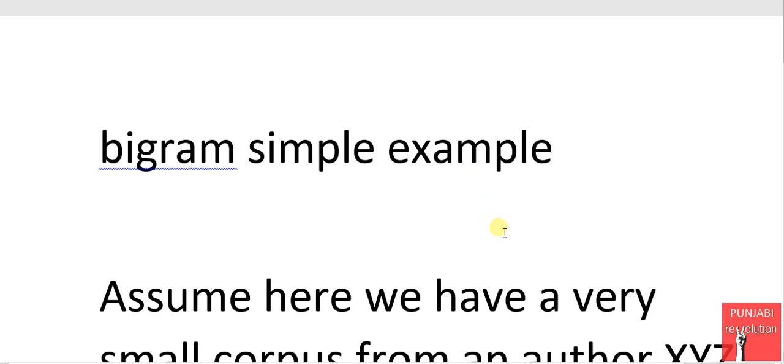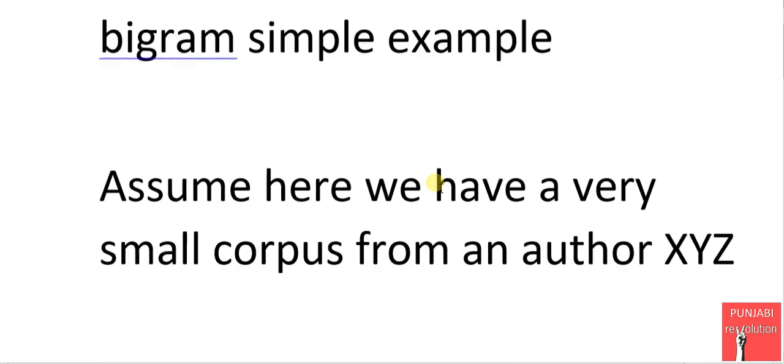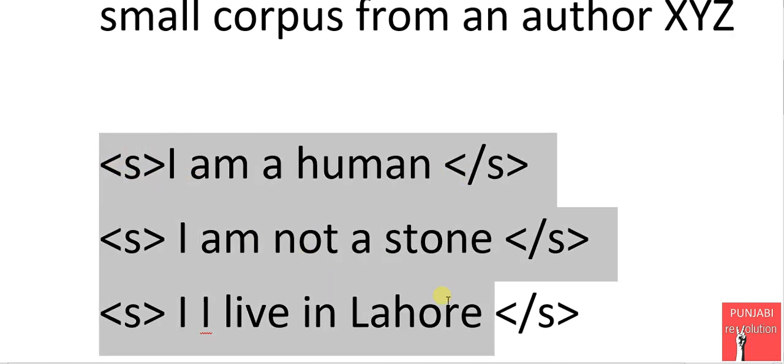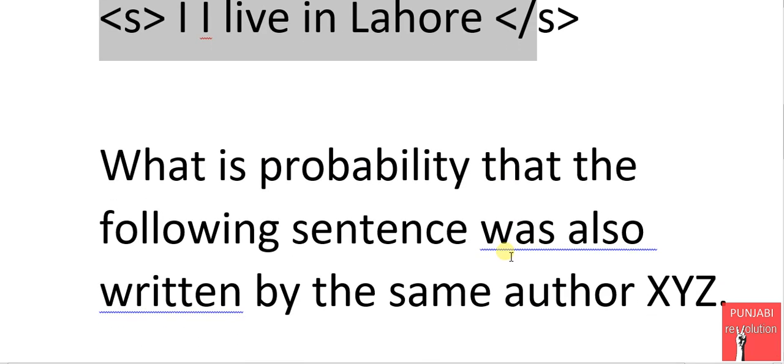Let us see a very interesting example for bigram models. In this example, suppose we have a given text. This is a training text, a very little corpus. This text is written by some author, say XYZ, and we train our application by using this text.